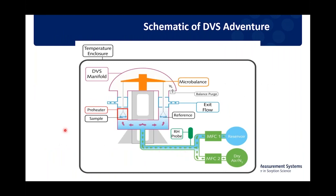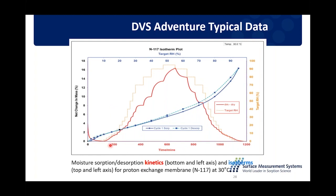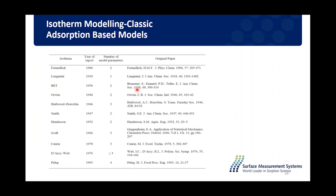Moving on to some examples related to DVS as well. DVS measures the weight change as a function of relative humidity, and as Tiantian showed, it can be coupled with in situ Raman to look at both weight gain and loss along with structural changes. Typically in DVS you increase or decrease the relative humidity and measure the mass gain or mass loss to construct an isotherm — the equilibrium uptakes at each relative humidity stage — and you can also get the kinetics: how quickly or slowly water comes on or off the sample.